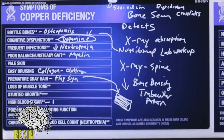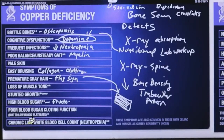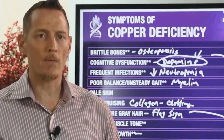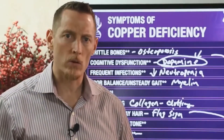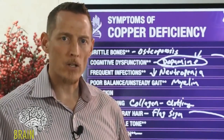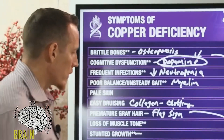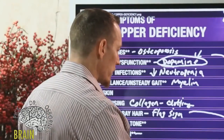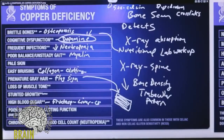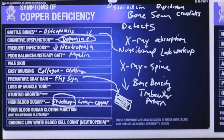High blood sugar is another symptom, and with copper, it's less about glucose and more about fructose. Most people today get fructose through high fructose corn syrup in drinks and confections. In order to metabolize fructose, which is done in the liver, copper is required. If you can't do that, fructose builds up in the liver, can cause fatty liver, and contributes to blood sugar fluctuations.